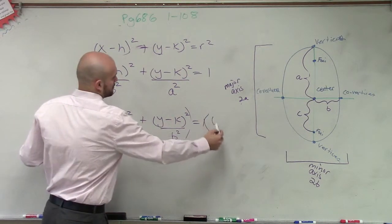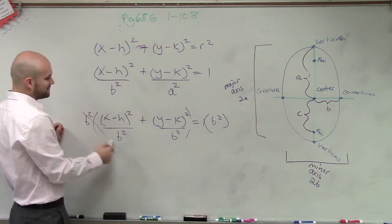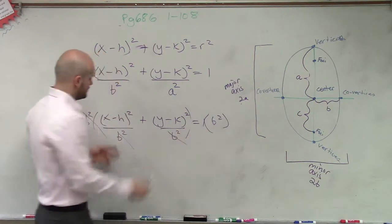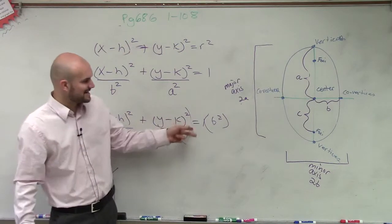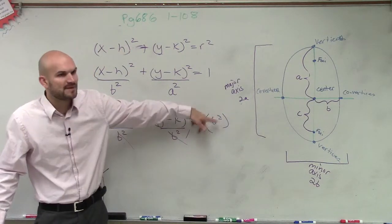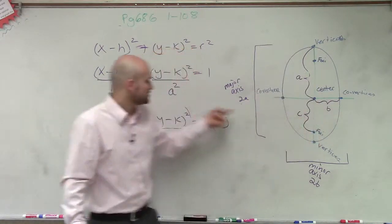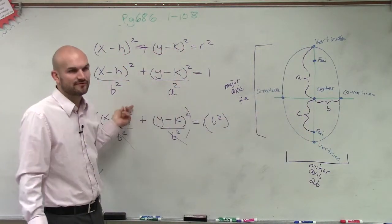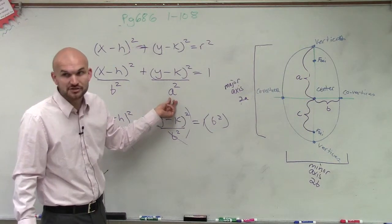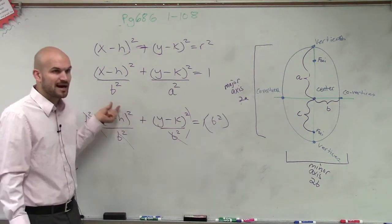Therefore, you'd be left with x minus h squared plus y minus k squared equals b squared. So if they were equal, we know that b squared would equal r. But we know that these are not the same. So we have to differentiate them with different variables, where a represents your major axis and b represents your minor axis.